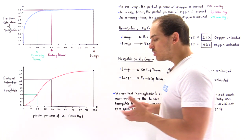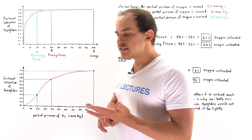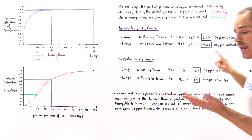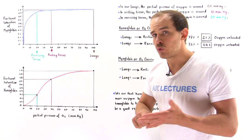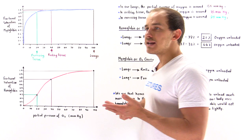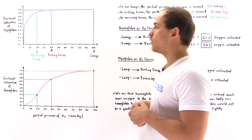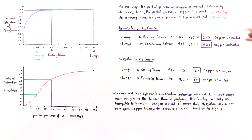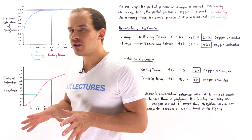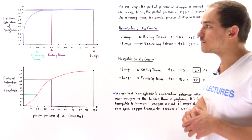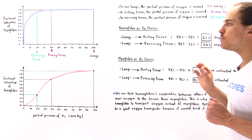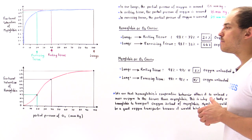Let's begin by recalling some basic biological facts. Inside our lungs, the partial pressure of oxygen is about 100 millimeters of mercury. Inside our resting tissue, when we're not exercising, the partial pressure drops to 40 millimeters of mercury. Inside our exercising tissue — for example, if we're swimming or running — the partial pressure drops to about 20 millimeters of mercury. We want to use these values and the oxygen dissociation curves for myoglobin and hemoglobin to show why hemoglobin is a much better carrier of oxygen than myoglobin.